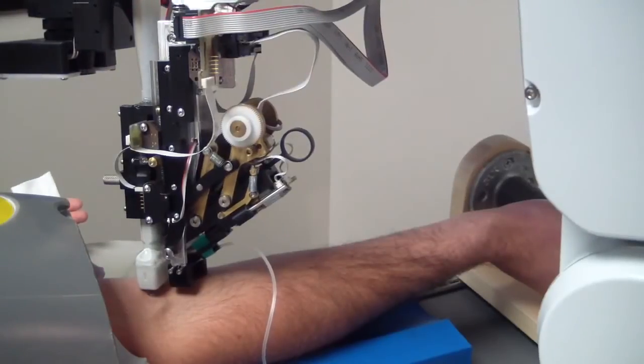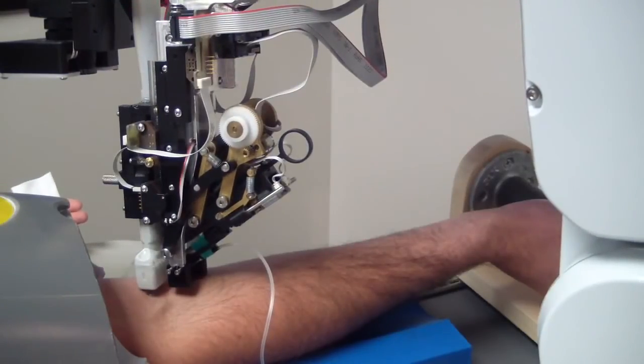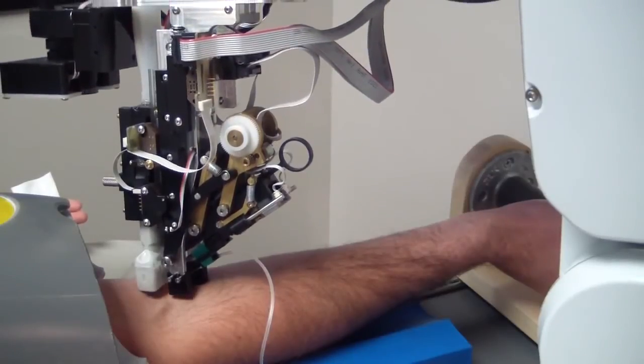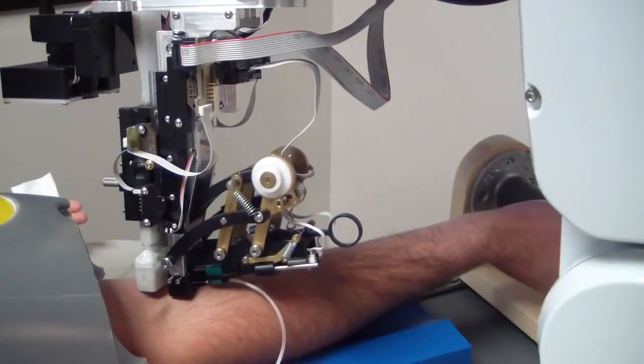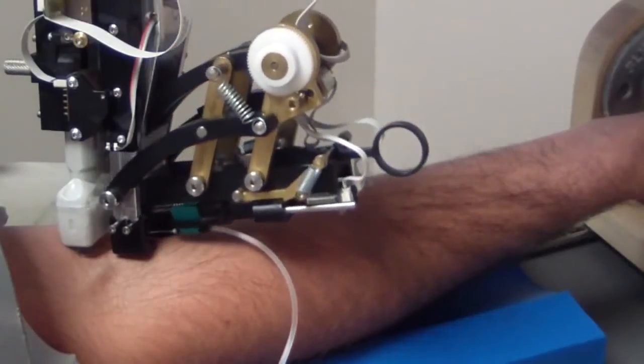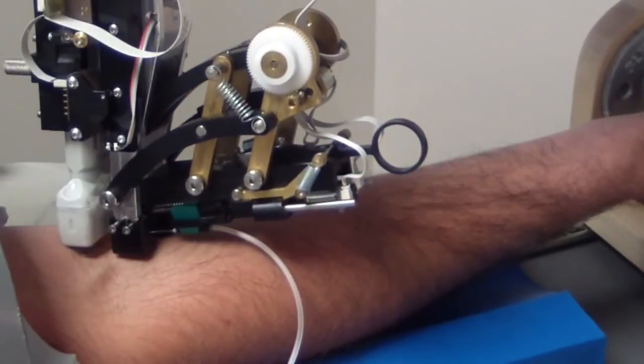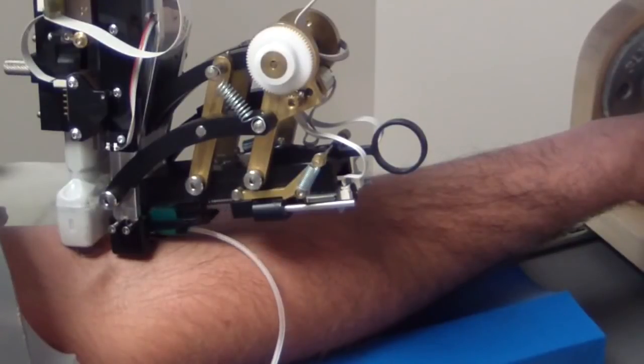Currently, V-Bot's machine can correctly identify the best vein to target about 83% of the time. That's about as good as an experienced technician. Company founder Stuart Harris plans to work the accuracy up to about 90% before starting clinical trials later this year.